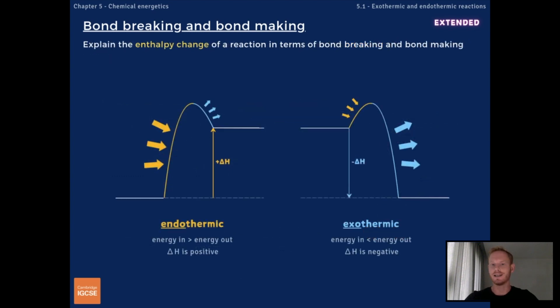Therefore, whether a reaction is net endothermic or exothermic depends on how much energy is taken in to break bonds compared to how much is released when new bonds form. If the energy needed to break bonds is greater than the energy released, then it's an endothermic reaction with a positive enthalpy change value.